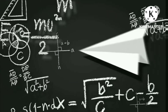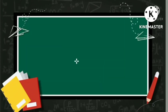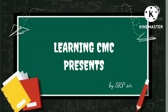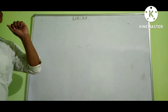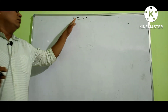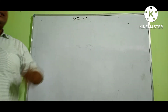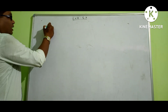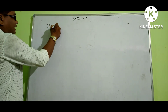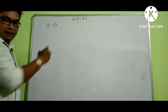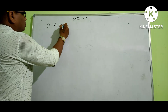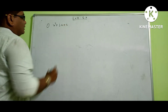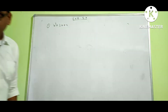We are discussing Exercise 5.7 from the CBSE NCERT textbook on derivatives. Number 1: find the second-order derivative of x² plus 3x plus 2.